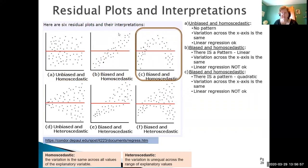For example c very similarly we do see a pattern again. It's a quadratic or inverted u. So that would be our bias. There is a pattern. The variation does stay fairly consistent across the x-axis so that's not an issue. But again because of that pattern linear regression is not appropriate.